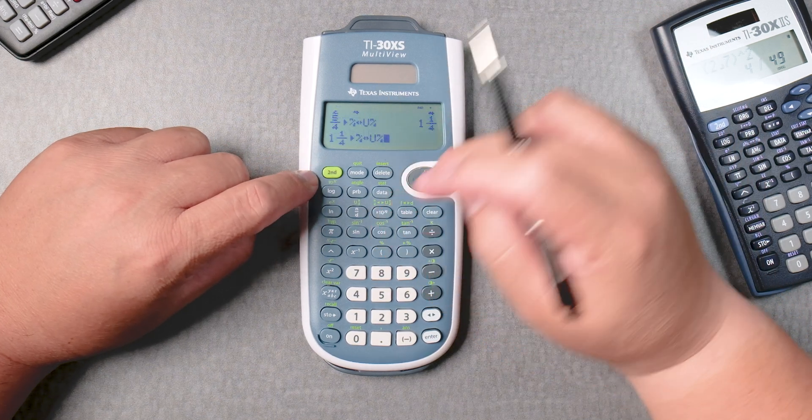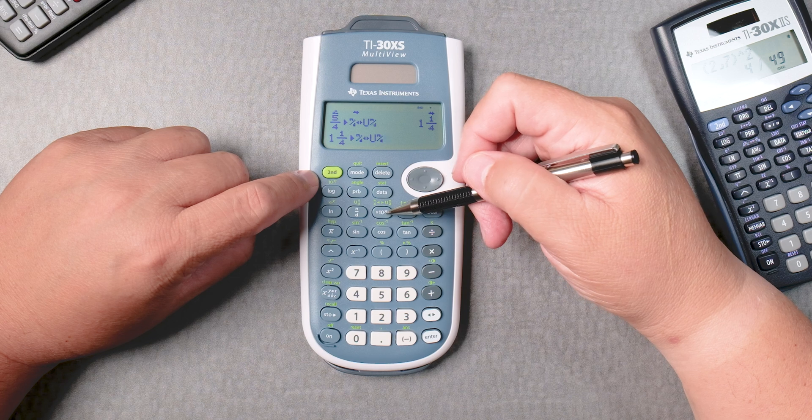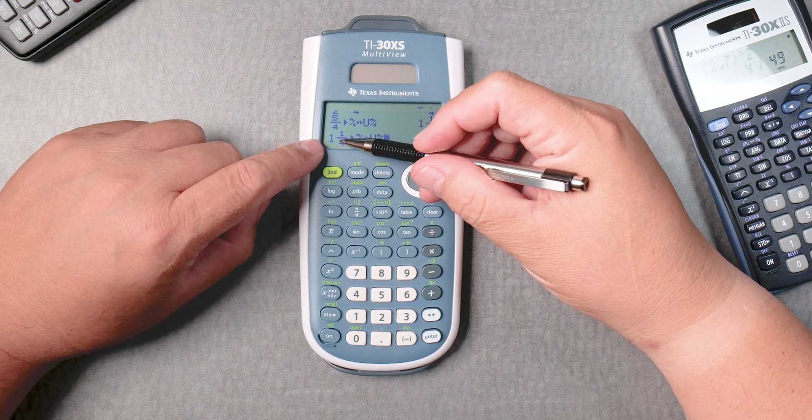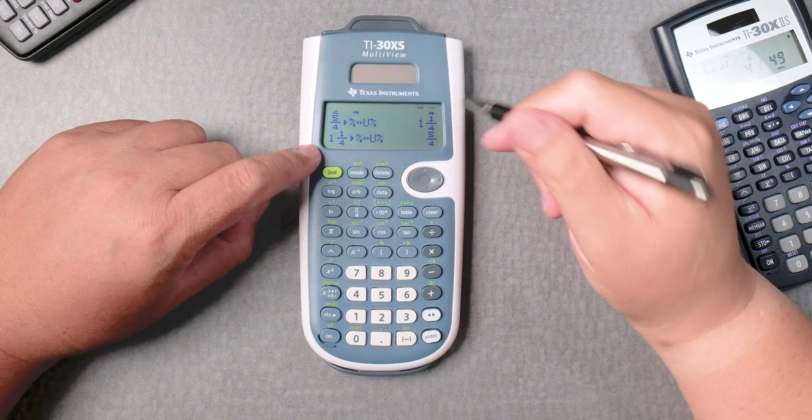And you can press 2nd, same button, times 10 to the n. I want to go from a mixed number to improper fraction. You can press enter, and there it is.